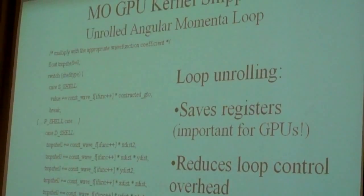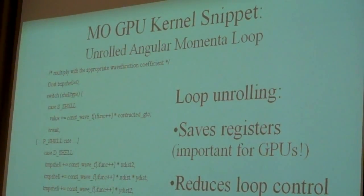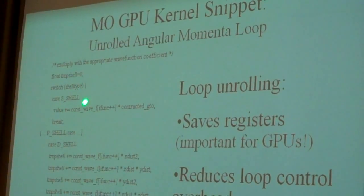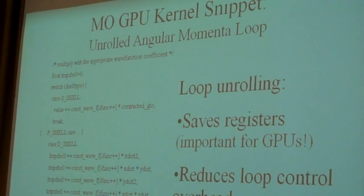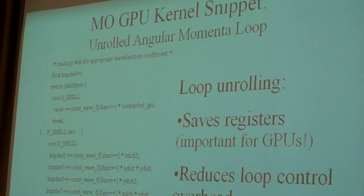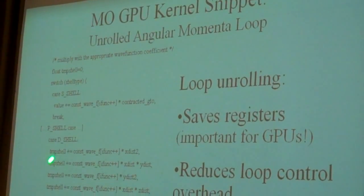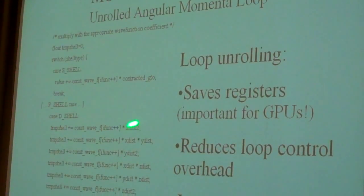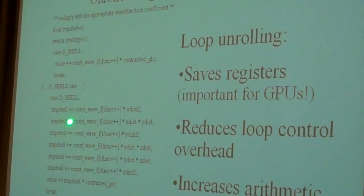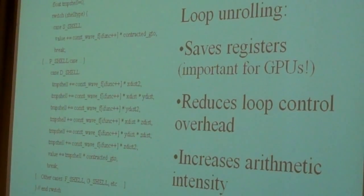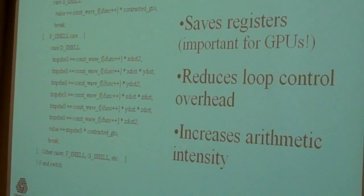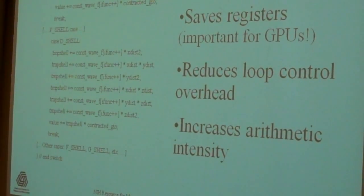So the angular momenta loops that I was describing, instead of actually processing those with a loop here, we have the switch statement. You can see we have a case for an s-shell, d-shell, and so on, and a p-shell, and so on. And these then are unrolled loops. This would have been a loop that evaluated each one of these lines of code. But since we know a priori how that's going to work out, we can make special blocks of code for every one of those cases.